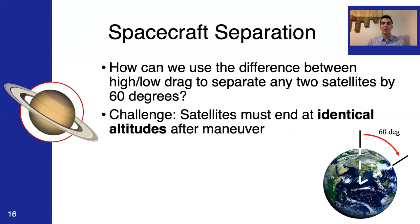Now given these models of orbital decay, how can we use these or use the difference in the trajectories between the high and the low drag attitudes to separate any two satellites by an arbitrary distance, say 60 degrees, about the center of the Earth? Well, we'll have to come up with a creative sequence of maneuvers to accomplish this. Whatever we choose to do, it's important that the satellites end at identical altitudes after the maneuver, because if they don't, then the satellites will exist in fundamentally different orbits and therefore they won't maintain their relative distance over time.